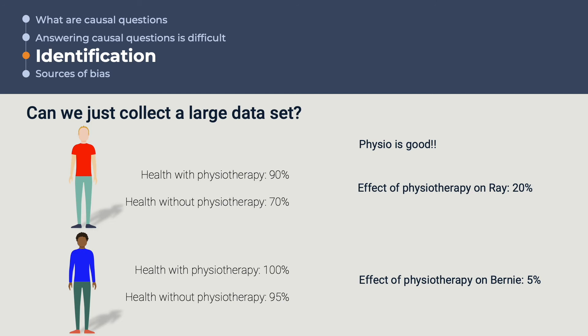So, in real life, most likely, Ray will undergo treatment, and we will observe Ray's health having undergone physiotherapy, and most likely Bernie will save his money, and will not undergo treatment, so we will observe Bernie's health without physiotherapy. What data will we have in real life? We will see Ray's health with physiotherapy, which stands at 90%. We will see Bernie's health without physiotherapy, standing at 95%. When we compare Ray and Bernie's data, what does this tell us? Since Ray's health stands lower than Bernie's health, and only Ray has undergone physio, we would conclude that physiotherapy is bad for you, which in this tale, we know is wrong.